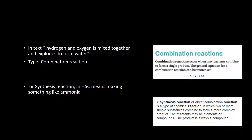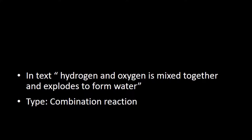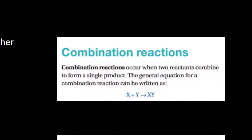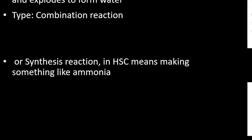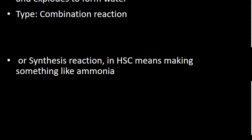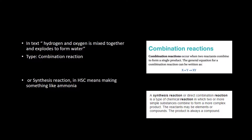We're going to have a look at a classical chemical reaction. You may be told in text that hydrogen and oxygen are mixed together and they explode to form water. The type of reaction is called a combination reaction. From the textbook, combination reactions occur when two reactants — in this case hydrogen and oxygen — combine to form a single product, in this case water. The general reaction is X + Y → XY. It's also called a synthesis reaction, but in HSC, synthesis reaction means a combination reaction used to make a commercial product like ammonia.